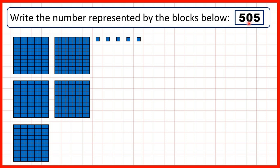Again, you can see why this zero is important. If we didn't have this zero, we would have the number fifty-five. But that would be five tens and five ones, not the five hundreds and five ones that we have here.